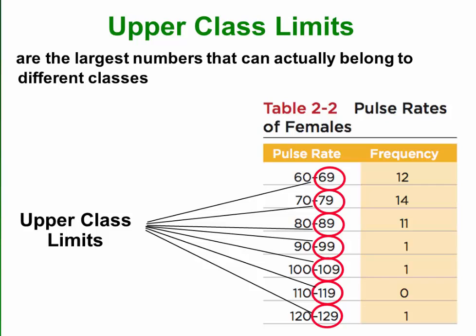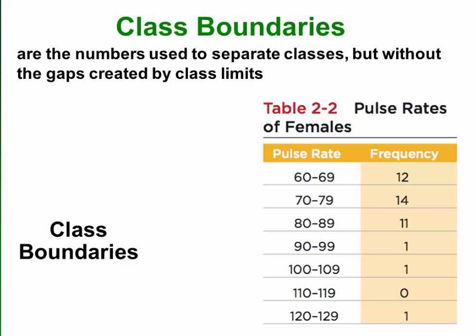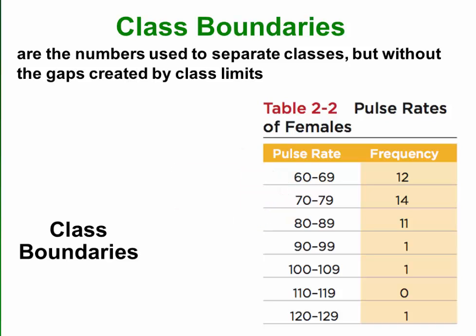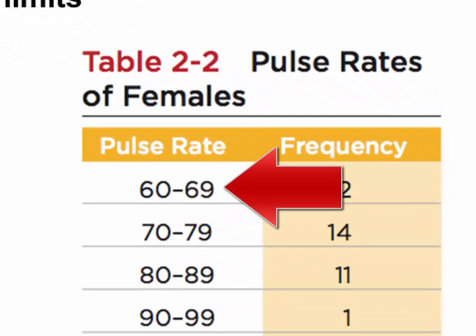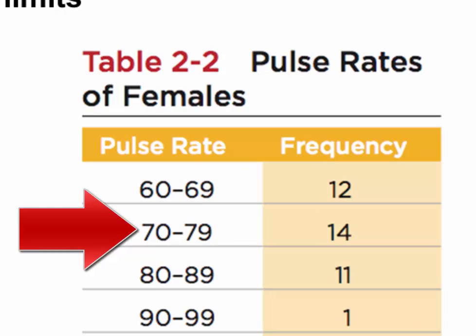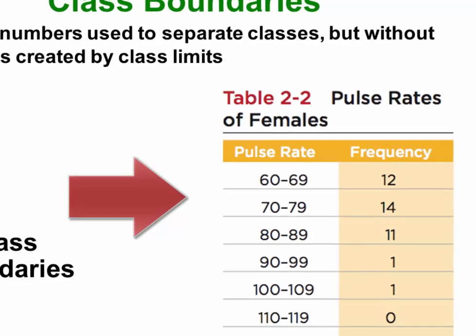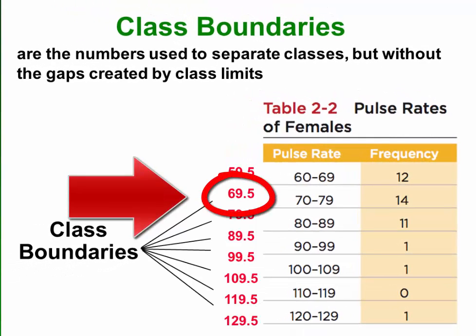You can think of class boundaries as being similar to borders between countries. The border between the first class and the second class would be a number that separates the two such that there is no gap. If you consider the class limits, the upper class limit of the first class and the lower class limit of the second class, there's a gap between these two numbers. The class boundary, however, is the number chosen between those two such that there is no gap, so the upper class boundary of the first class is the same as the lower class boundary of the second class.